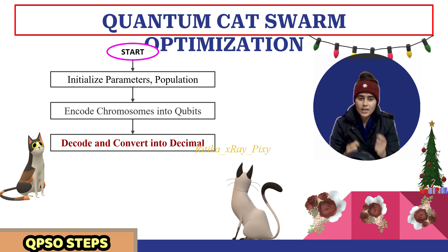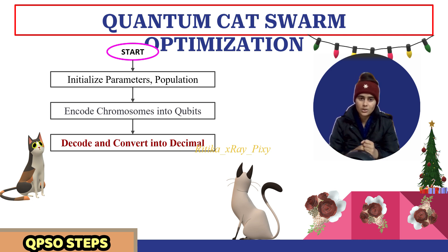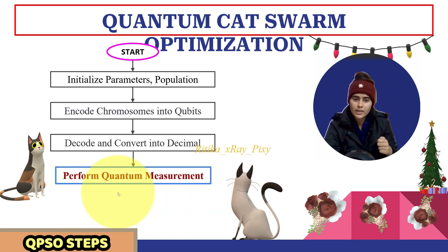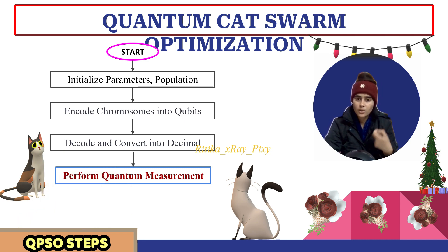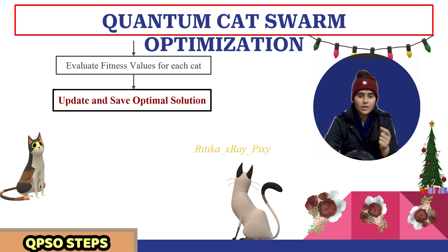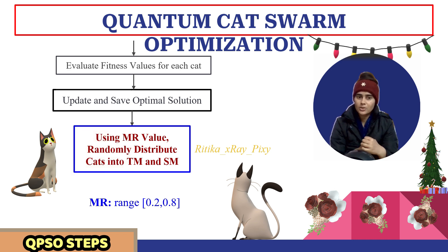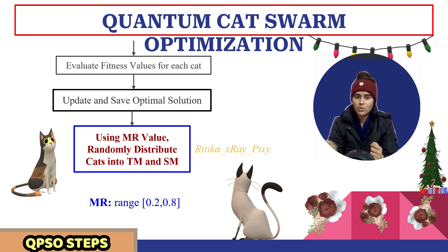To encode classical qubit 0: first, initialize the qubit in the ket-0 state. Next, to decode it, we measure the qubit — if the measurement result is also ket-0, the qubit is successfully decoded. Quantum measurement is the process of obtaining information from the quantum system. After that, we evaluate the fitness value for each cat, rank the cats, and update and save the best solution as the optimal one. We then apply cat swarm optimization using the mixture ratio MR to distribute cats into tracing mode and seeking mode.